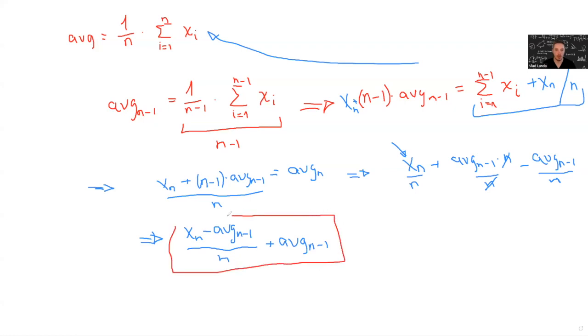So all we need to do in order to calculate the average in real time and not count all elements each time new data comes, we just need to store two variables: the current average and the number of elements that we have up till now. Let's code it up.